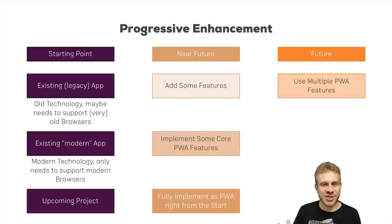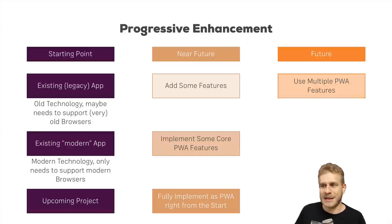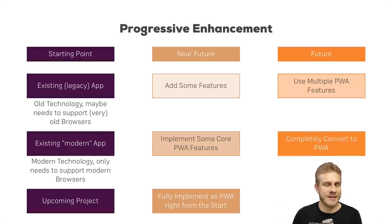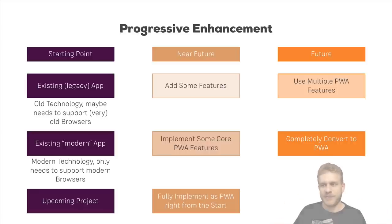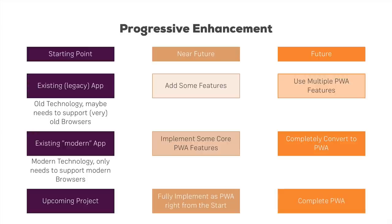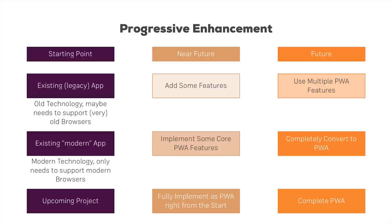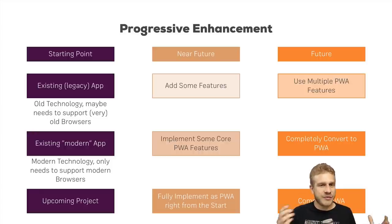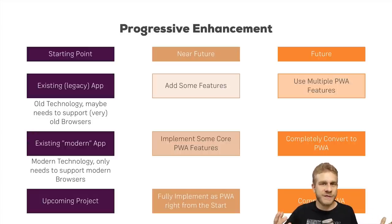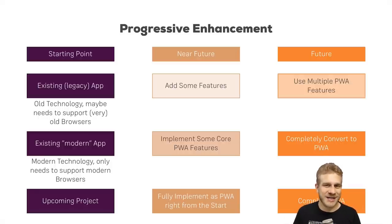Pick the features which enhance your application and add them. Our middle app might become a completely converted progressive web app once we've added all the features — solid caching, push notifications, and all that. This is important because many people look at these technologies and say they don't have the resources to rebuild their old app or have to support old browsers. The answer is: that's not a problem. Simply add the features which enhance your application right now, and feel free to turn it into a complete progressive web app if you have time. Definitely consider it for all upcoming projects.